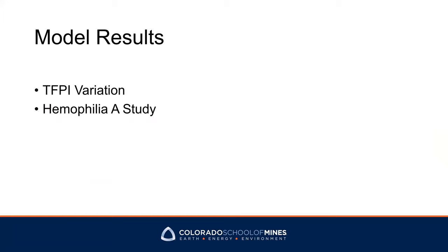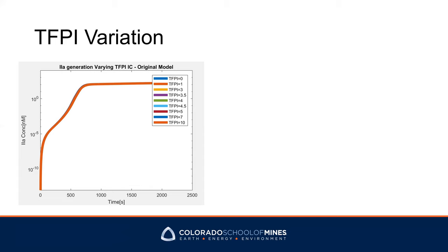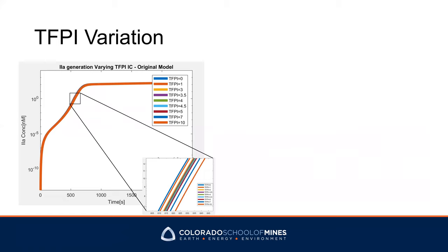Now let's look at some results from these models. We are going to look at how various TFPI levels affect the system and how TFPI influences hemophilia A blood. First, we varied TFPI levels. In the previous model, there was little response to various TFPI levels, and now we want to see how TFPI levels influence thrombin output in the new model. This plot shows thrombin generation by changing TFPI from 0 to 10. In the original model simulation, we do not see significant differences in thrombin generation, even when zoomed in.